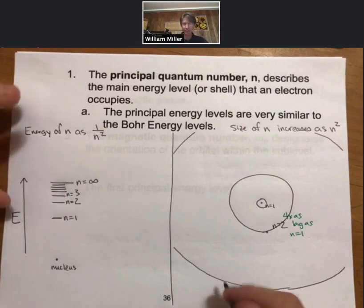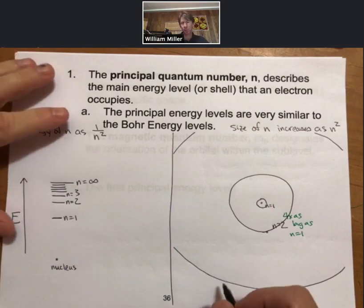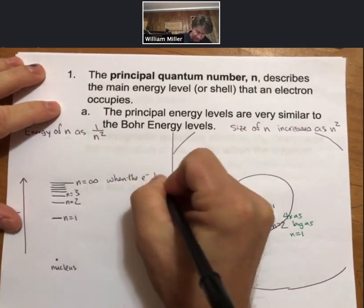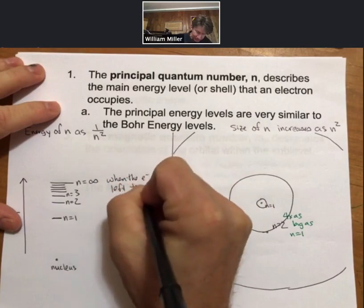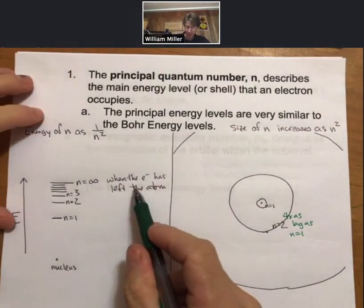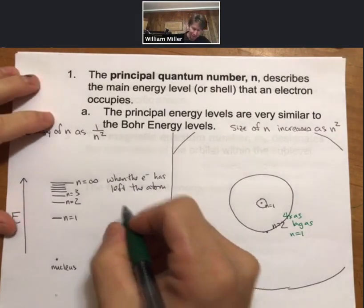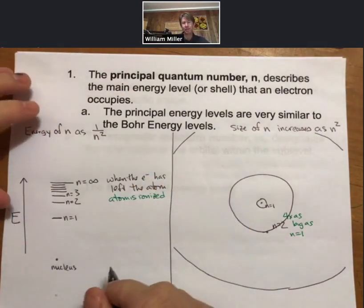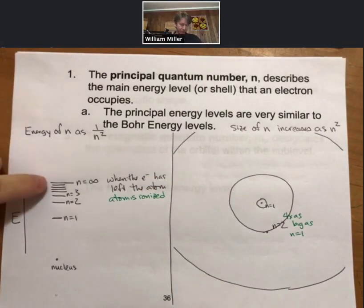What we will say, though, is that for n equals infinity, that is the definition of when the electron has left the atom. And that will be an important part. So that's equivalent to saying that the electron is no longer part of the atom. And what we will do is, we will also call this when the electron has left the atom, so the atom is ionized. And if you were to take a hydrogen atom, a hydrogen atom with its electron and n equals infinity would be H plus because it's lost that electron. Therefore, the term ionized.